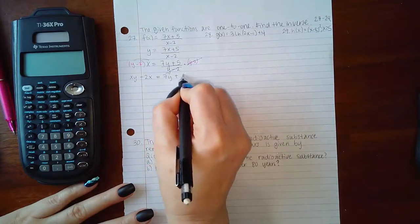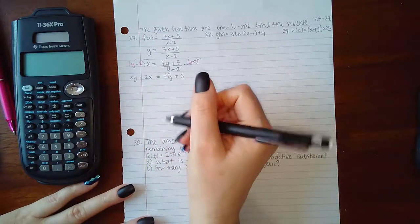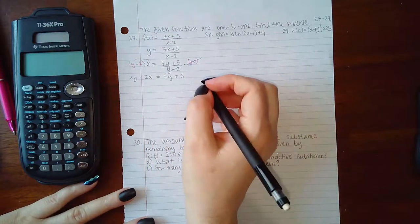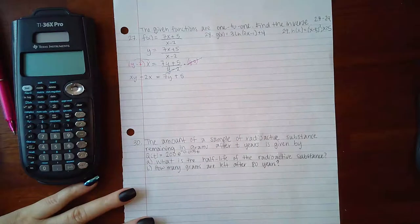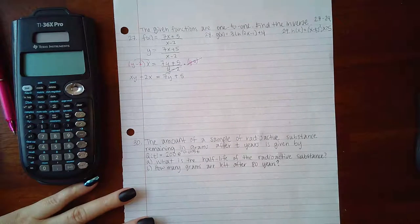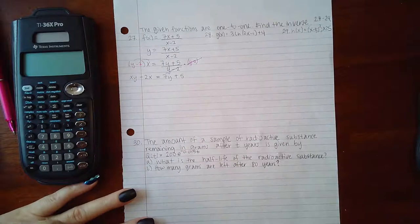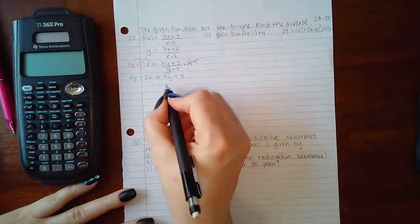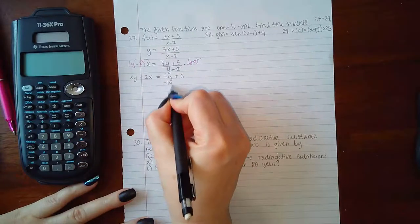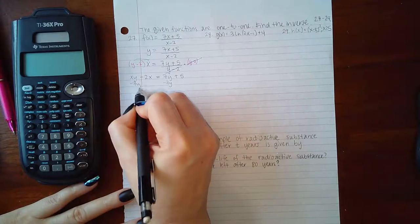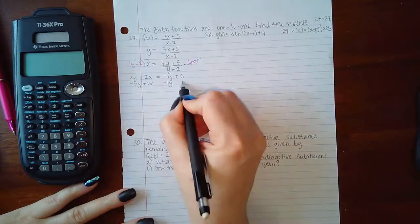Now y is the variable that I'm trying to isolate, so the goal is to get all the terms with y on one side of the equation and all the terms without y on the other side. I'm going to subtract 7y on both sides and add 2x on both sides.